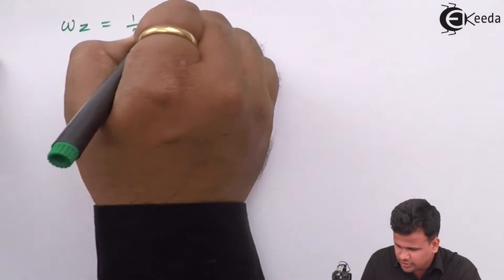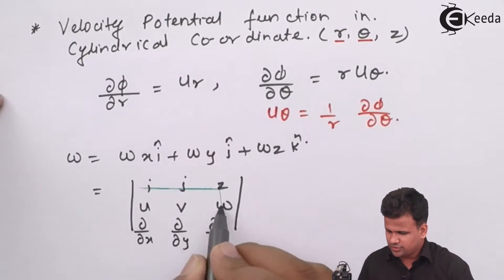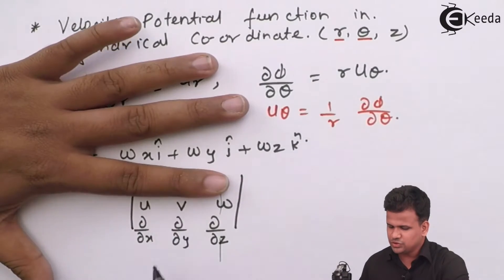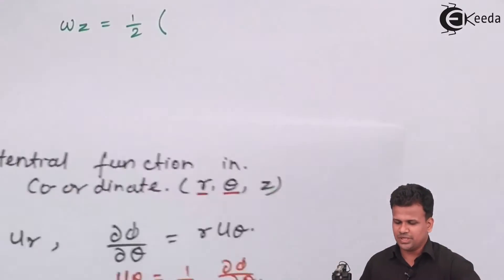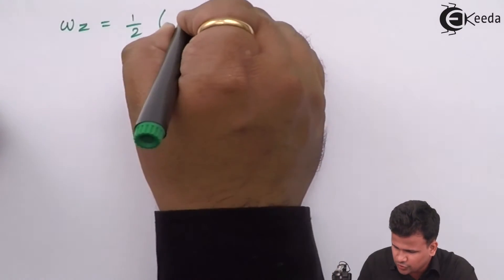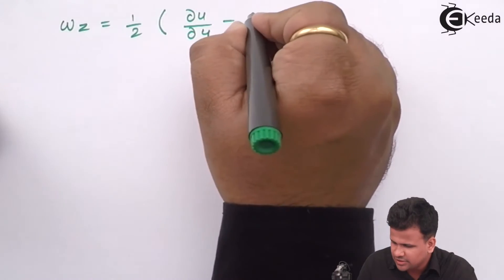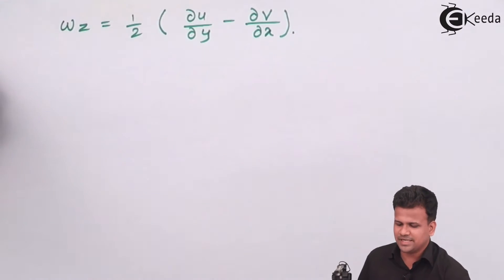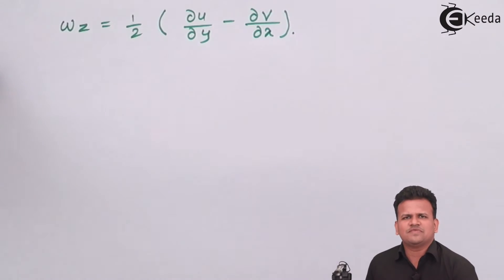For omega_z, we calculate: omega_z equals one-half times (dou u by dou y minus dou v by dou x). So omega_z equals half of (dou u by dou y minus dou v by dou x). Now let us examine rotational and irrotational flow in the form of the velocity potential function.